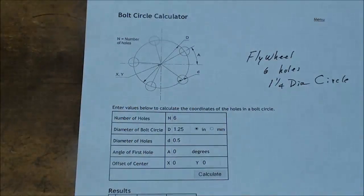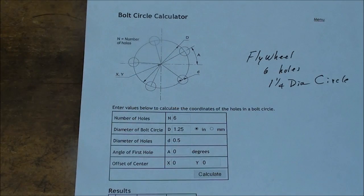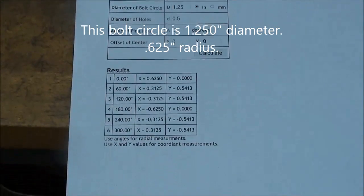But the easier method is to look it up on the internet, just do a search for bolt circle, and this particular one is the Little Machine Shop, which is a vendor that many of you use, but they have this page here where you just plug in your numbers, and you'll get results like we got right down here.